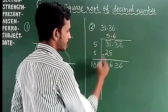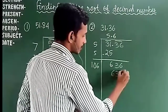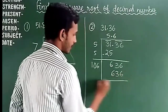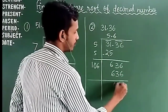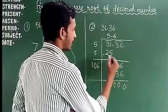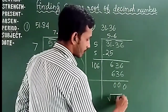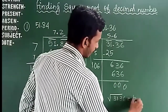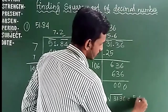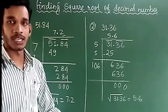We need a digit such that 10_×_ gives a product ending in 6. That digit is 6, since 106×6 = 636, giving remainder 0. So the answer for √31.36 is 5.6.